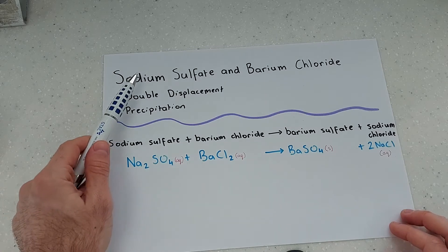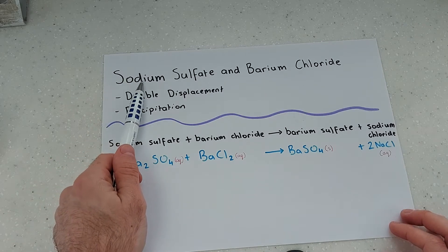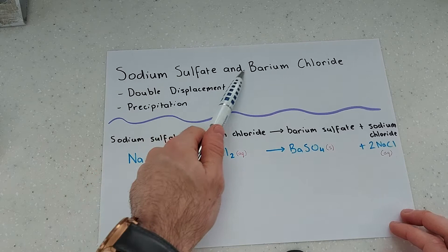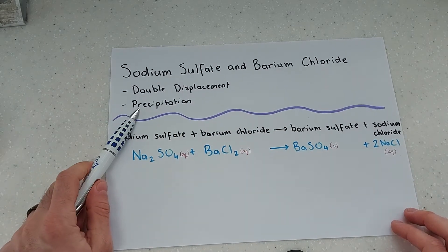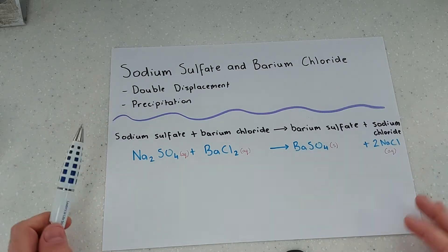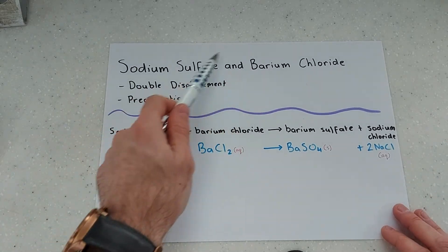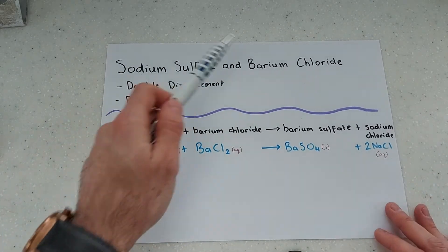I'm going to mix solutions of sodium sulfate and barium chloride and I'm hoping to produce a precipitate, or in other words I'm hoping to produce a solid from mixing these two liquids, these two solutions.